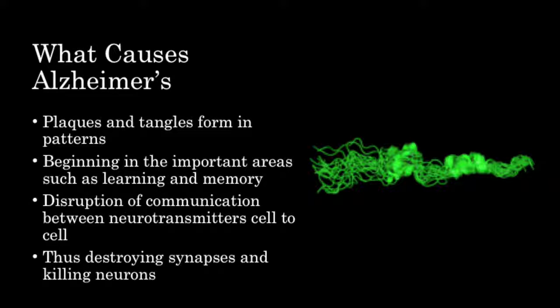Plaques and tangles form patterns, normally at the beginning of important areas such as learning and memory. The disruption of communication between neurotransmitters from cell to cell thus destroys the synapses and kills neurons.